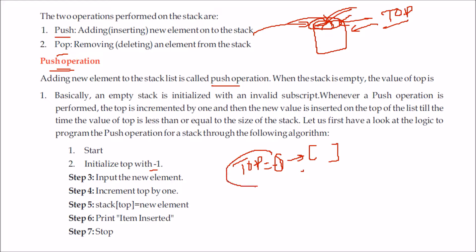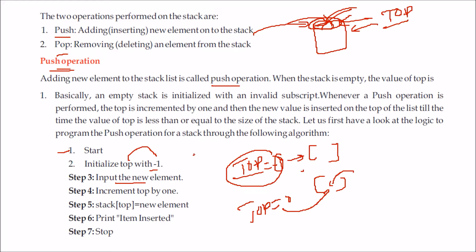When you want to insert, you first have to increment the top value — make top equal to 0 — so it is pointing to a valid position, and then you can insert an element. The algorithm works like this: start with top equal to minus 1, input the new element from the user, increment top by 1, and then place that element at the top index of the stack. This is how items are inserted in the stack through the push operation.